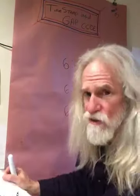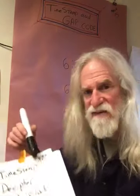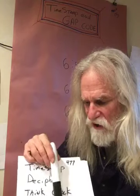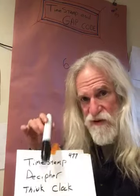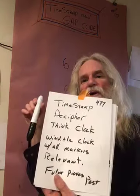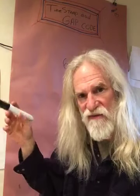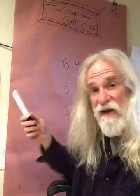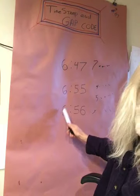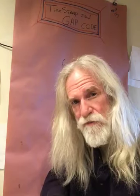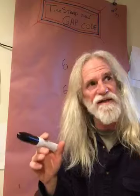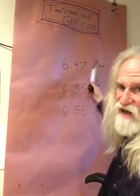Let's reverse and mirror 774 to get 477. Q drop 477 says: 'Timestamp decipher. Think clock. Unwind the clock with all markers. Relevant. Future proofs past.' When this was put out there, we didn't know what was going on — there weren't enough clues. Timestamp decipher — are we deciphering timestamps here? Are we starting to understand? This is the timestamp and gap code.